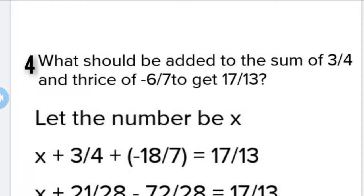Question 4: What should be added to the sum of 3/4 and thrice of -6/7 to get 17/13? Let's understand what needs to be added.